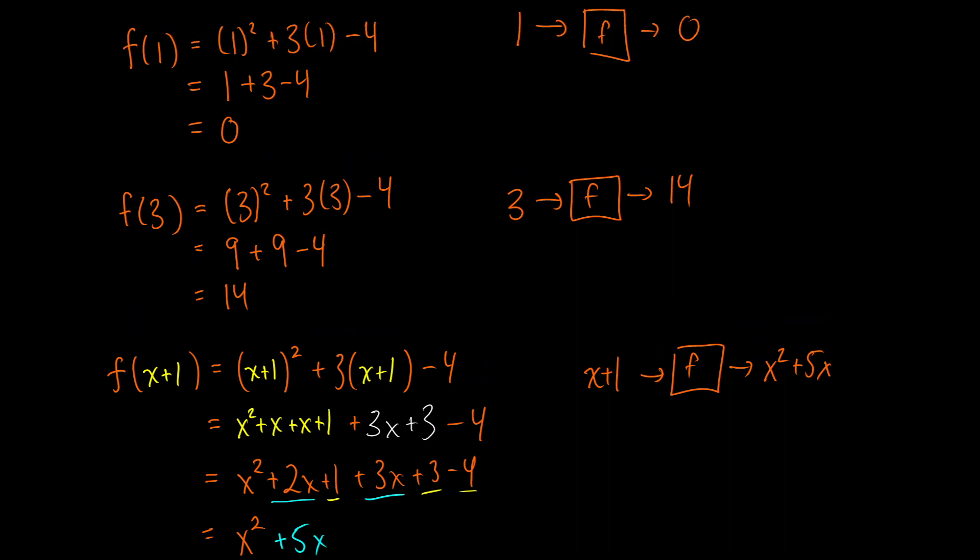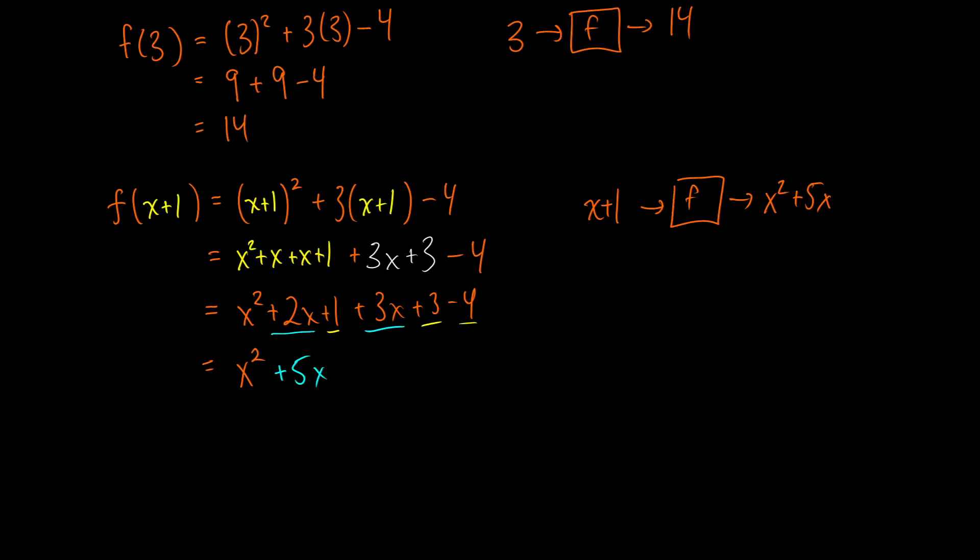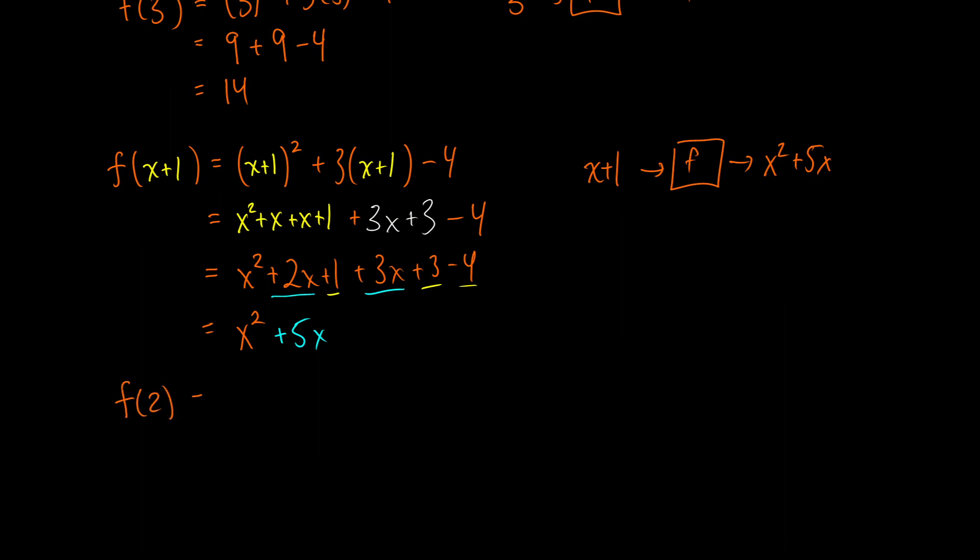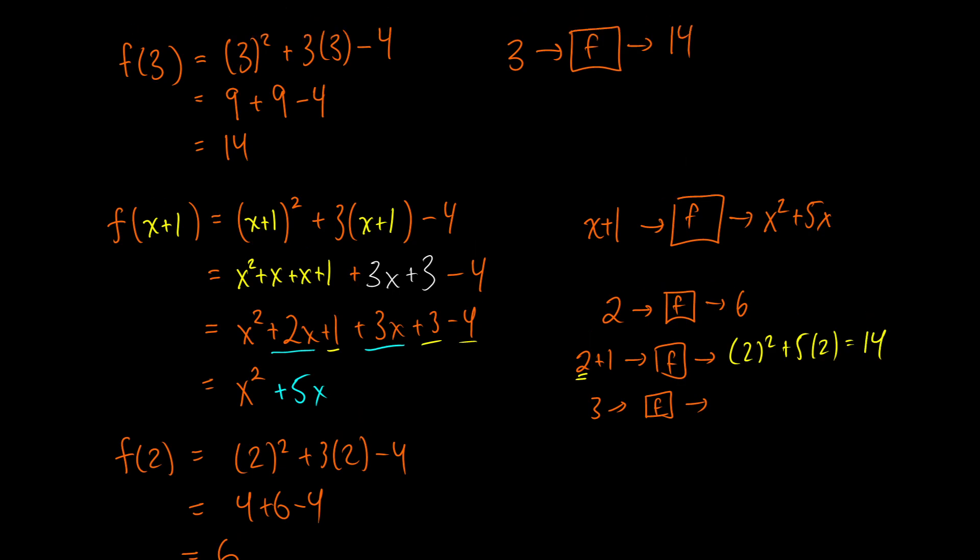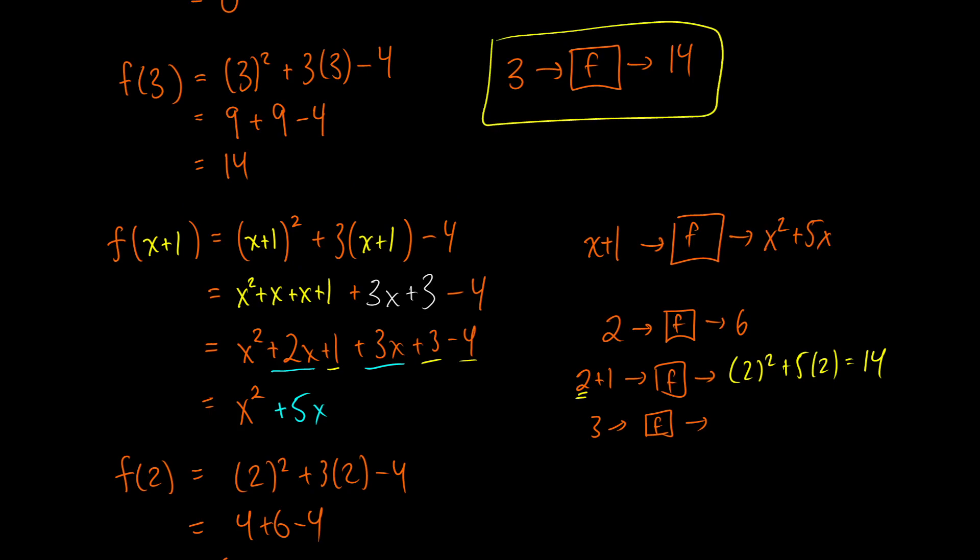So to illustrate how this works, I didn't pick the best numbers here, but let's just assume that we have to evaluate f(2). So this is going to be 2 squared plus 3 times 2 minus 4, this will give us 4 plus 6 minus 4, which gives us 6. Okay, so if we put in 2 into f, we get 6 out. Now what if we put 2 plus 1 into f? This is going to be the same as 3 going into f. Well, if we put 2 plus 1 into f, what are we replacing? We're replacing the x with 2. We're going to get 2 squared plus 5 times 2, which will be 4 plus 10, which is 14. And if we put 3 into f, we already saw before that we get 14 out.